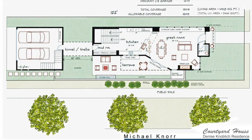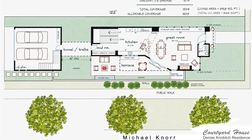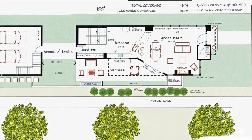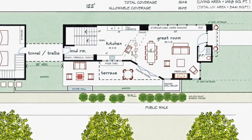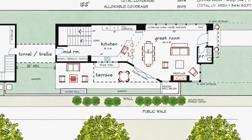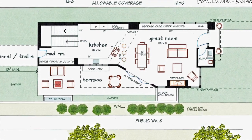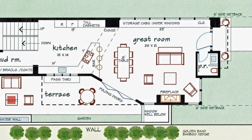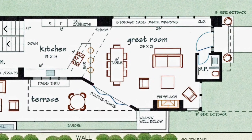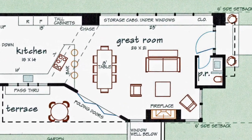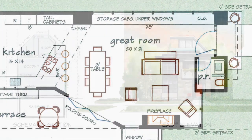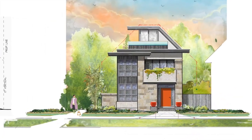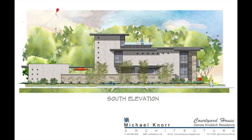Once the program has been approved by the client, the architect can begin actual drawings for the schematic design. We always show furniture on the plan, not because we're trying to act as interior designers, but because it gives a sense of scale to the rooms and demonstrates that there is at least one viable way to arrange real furniture in the space. We also show exterior elevations as part of the schematic design.